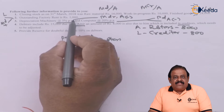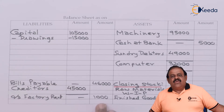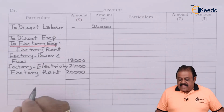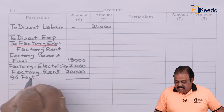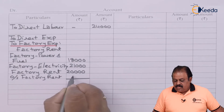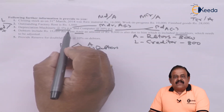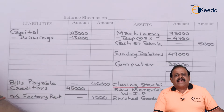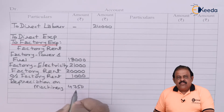Outstanding factory rent 1,000 — one effect as a liability on liability side, outstanding factory rent 1,000. Second effect in manufacturing account under factory expenses, outstanding factory rent recorded. Depreciation on machinery at 5% per annum — one effect: deduct from machinery on asset side, amount is 4,750. Second effect: recorded in manufacturing account debit side, depreciation on machinery 4,750.